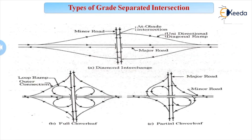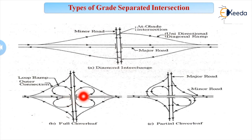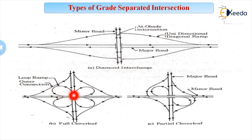The types of grade separated intersection include diamond intersection, full cloverleaf, and partial cloverleaf. Generally in India, the full cloverleaf is much preferred as compared to diamond intersection. In the cloverleaf, if traffic is moving in the straight direction, the vehicle moves from a loop and enters the other road — it exits from the left and enters on the left, so conflict points are totally avoided.